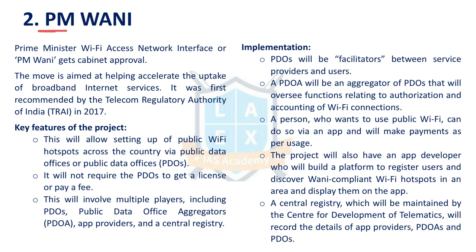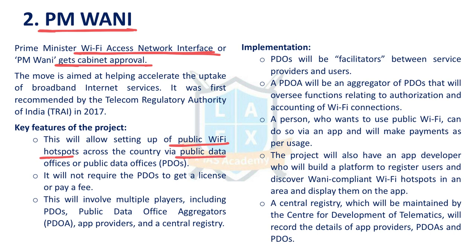The next issue is PM Vani. The Prime Minister launched the Prime Minister Wi-Fi Access Network Interface, also known as PM Vani. It received cabinet approval. This is a platform which allows setting up of public Wi-Fi hotspots across the country via public data offices, or PDOs.